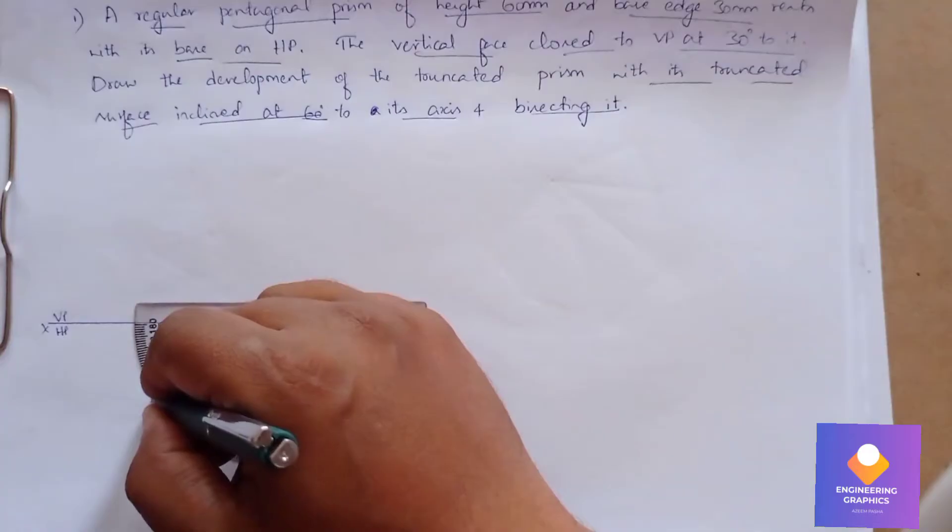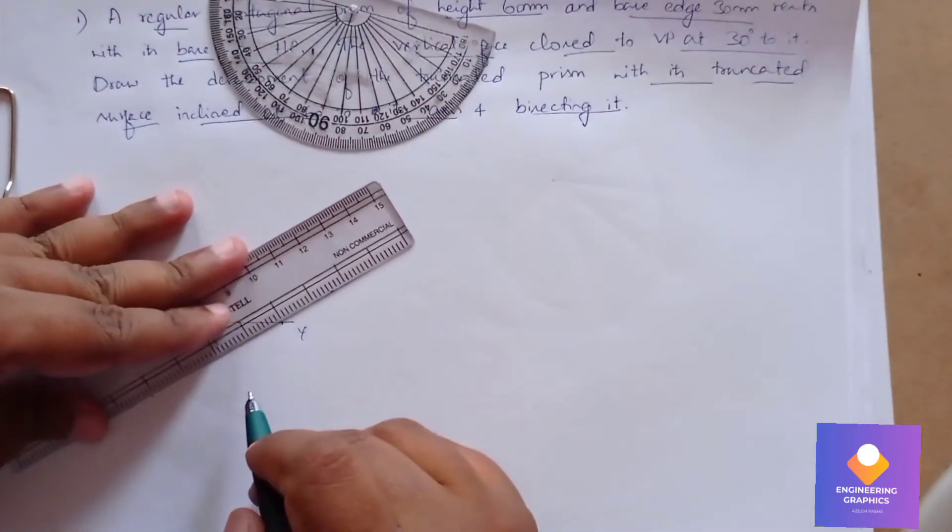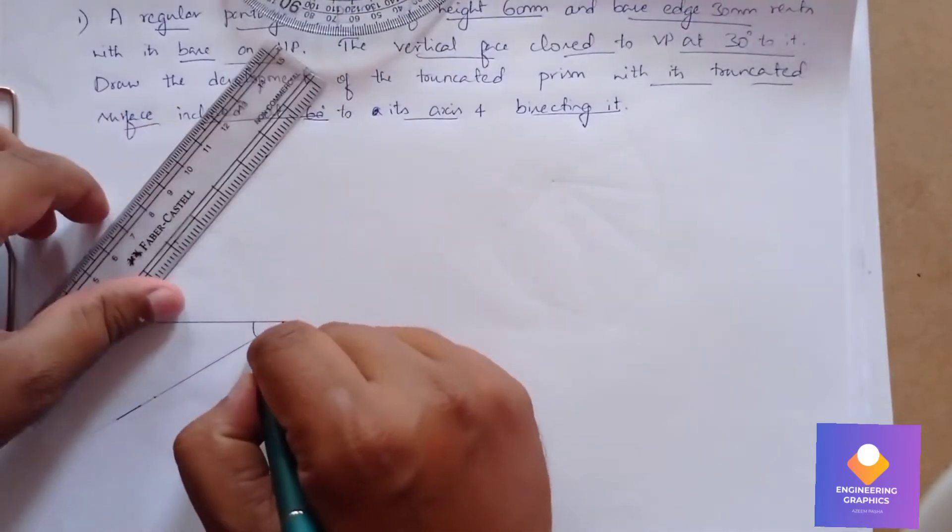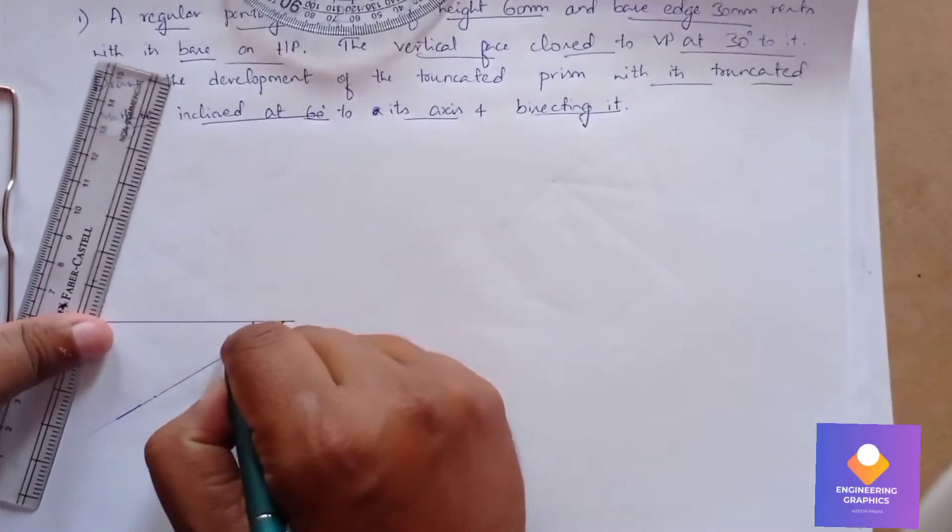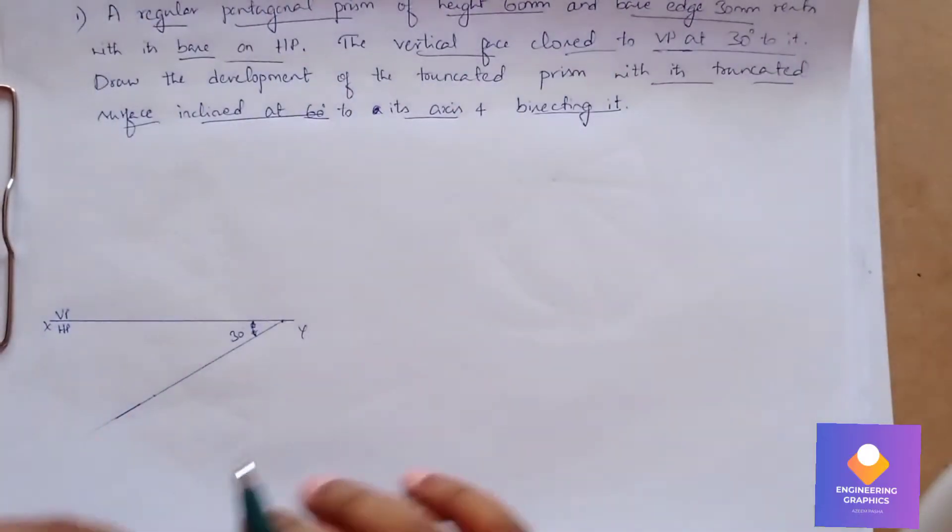So we need to place our pentagonal prism. Take a reference point and mark 30 degrees and draw an angle line. Mention angle 30 degrees. Here, with respect to VP, close to VP and inclined at 30 degrees.